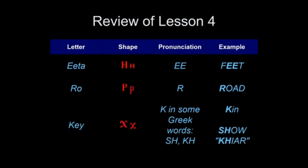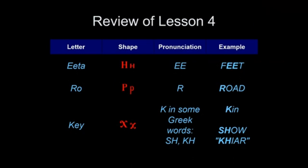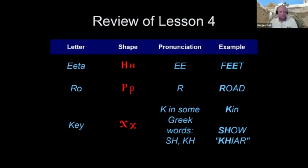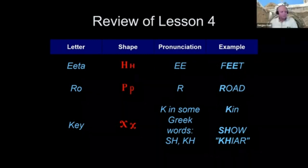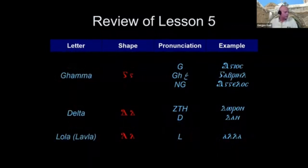Anthony, next. Eta makes like an E or double-E sound, a long E. It looks like a P. That's R. Key looks like an X — it's like a K, a 'cage,' or an SH sound. Very good, thank you Anthony. Next, Ahab.